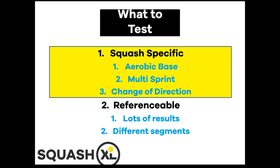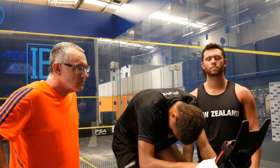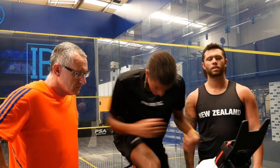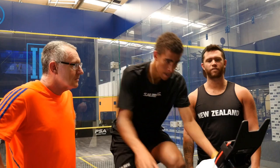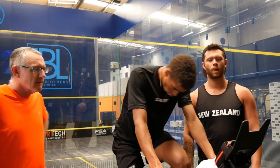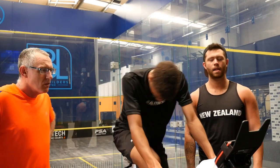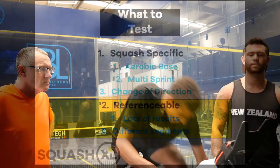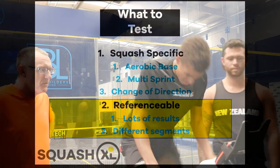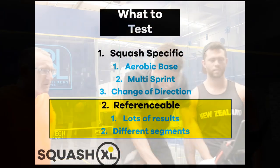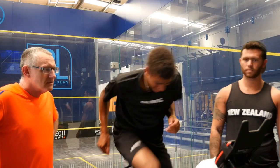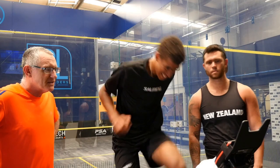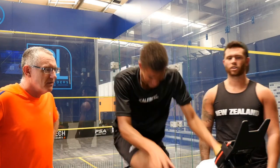In our previous video we looked at our three box model. We want to know an athlete's aerobic base and their ability to change direction powerfully, as well as multi-sprint. A test is only useful if we know how to score it, so we need to have or intend to have lots of results from different sex, age and ability.